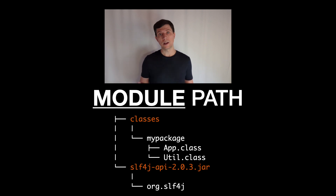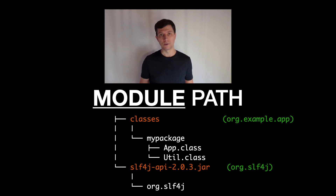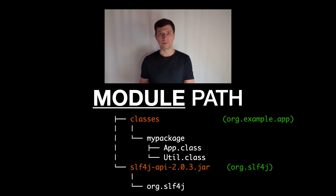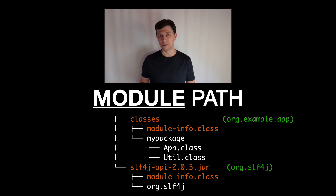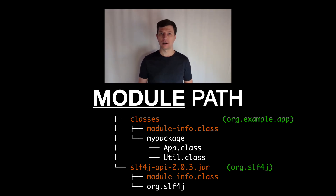With the module path, each entry becomes a module in the sense of the Java module system, and Java knows at compile time and runtime what these modules are and can distinguish between them. To do something useful with this, Java needs more information, which is defined in the module-info file that each jar or classes folder has. The file is also Java source code compiled to bytecode, with a specific format and keywords. The module-info class file has to exist for each jar or each classes folder.